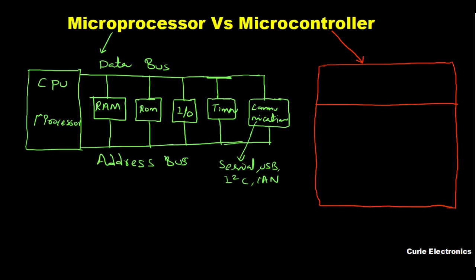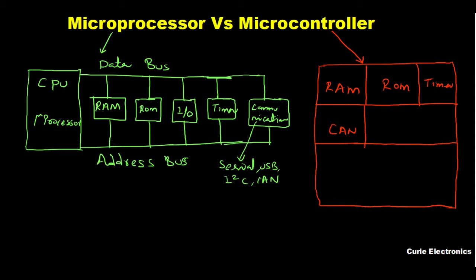In a microcontroller, everything is built in. There has to be a RAM, there has to be a ROM, and there is a timer. For communication, there can be CAN or LAN. There is also a serial port. All of these are included in a single standalone chip.